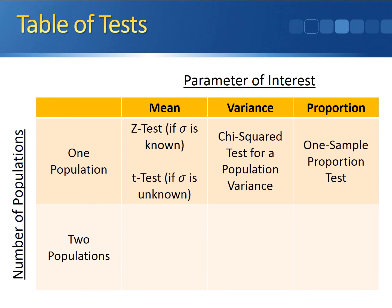Let's fill in another cell in our table. This was the first test that involved two populations where we were comparing the means, so the cell in the bottom left corner is going to be the difference of two means test.